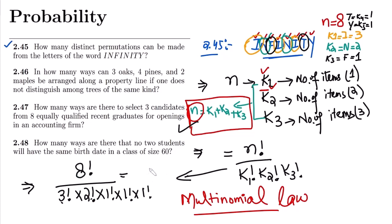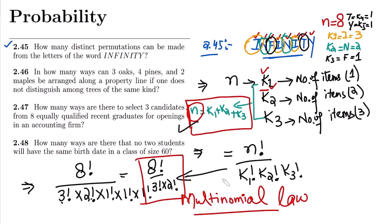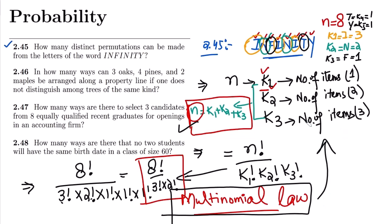Simplifying, the answer is 8 factorial divided by 3 factorial multiplied by 2 factorial. You can easily calculate this with a calculator. That is the solution of question 2.45, and the overall purpose of this question was to demonstrate the concept of the multinomial law — what it is and how to apply it.